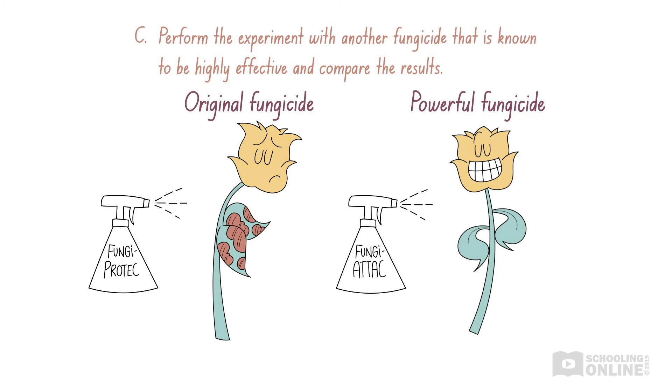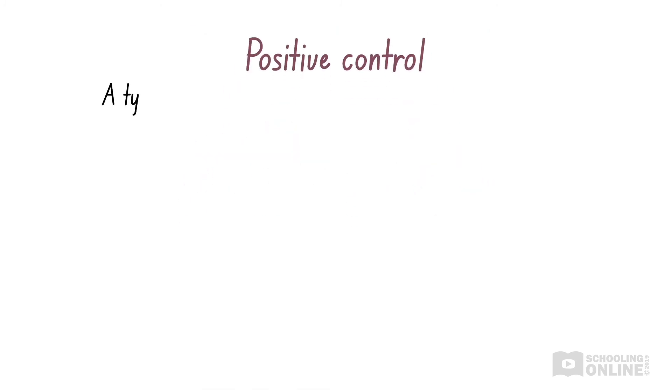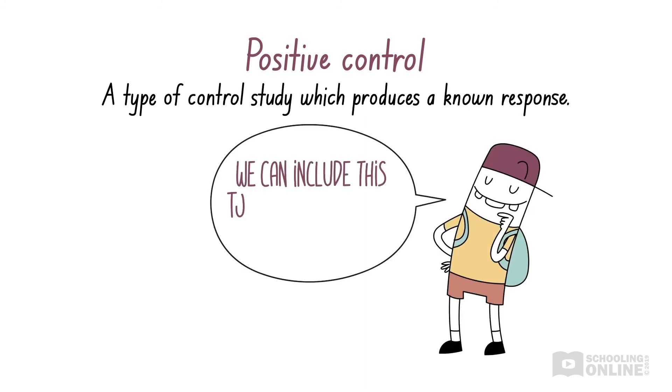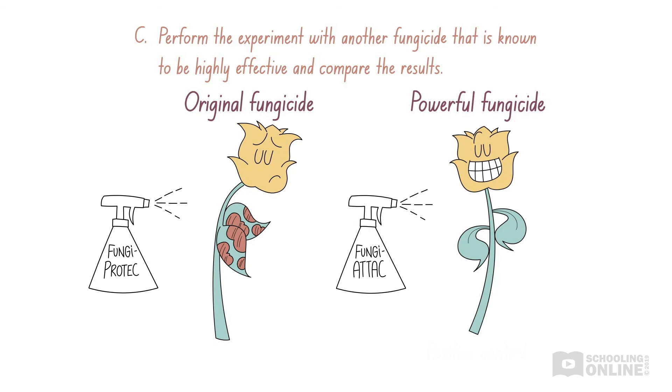In this case, the alternative fungicide acts as the positive control for the experiment. A positive control is a type of control study which produces a known response. It is often included in an experiment to test if the method is correct. We'll discuss this in more detail in our upcoming videos on validity in HSC biology skills. Here, Dan is checking his experimental method to improve the experimental validity. This does not affect the reliability of his experiment, so option C is also incorrect.